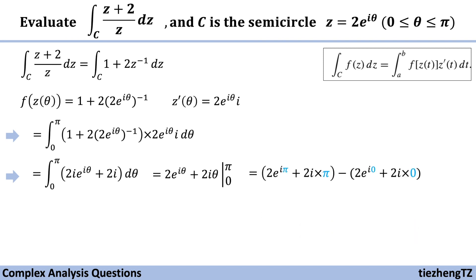Next, just substitute pi and 0 individually. And we know e to the power of i pi is minus 1, and e to the power of i times 0 is 1. So substitute, do the math, and we can get our final result, which is minus 4 plus 2 pi i.